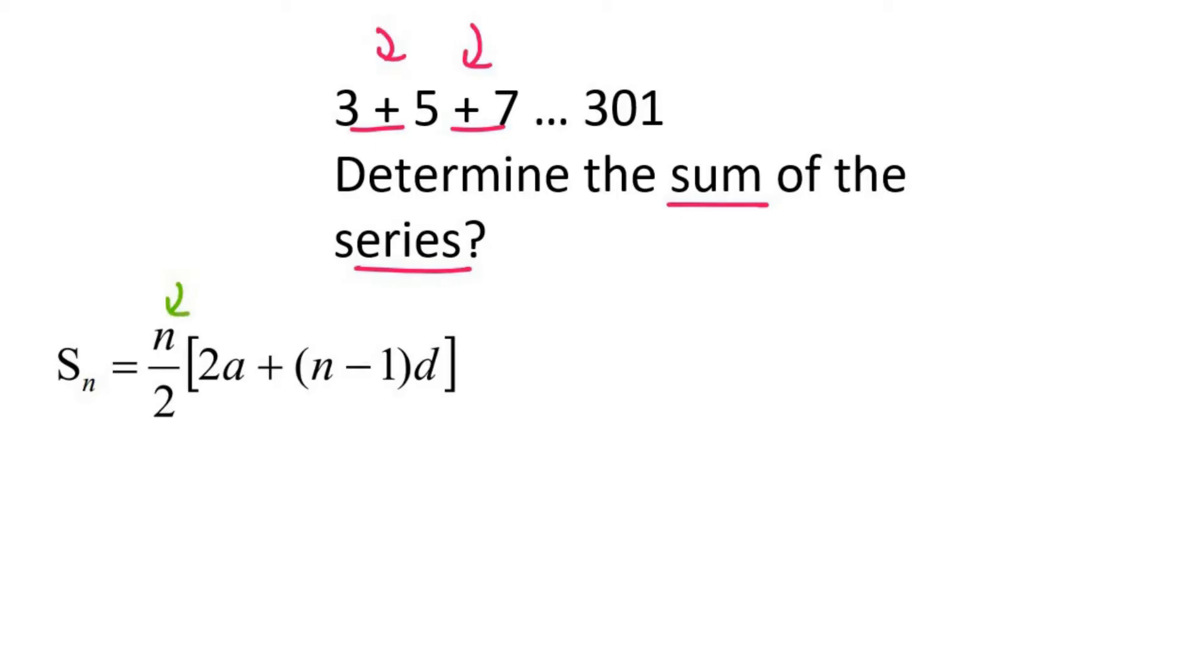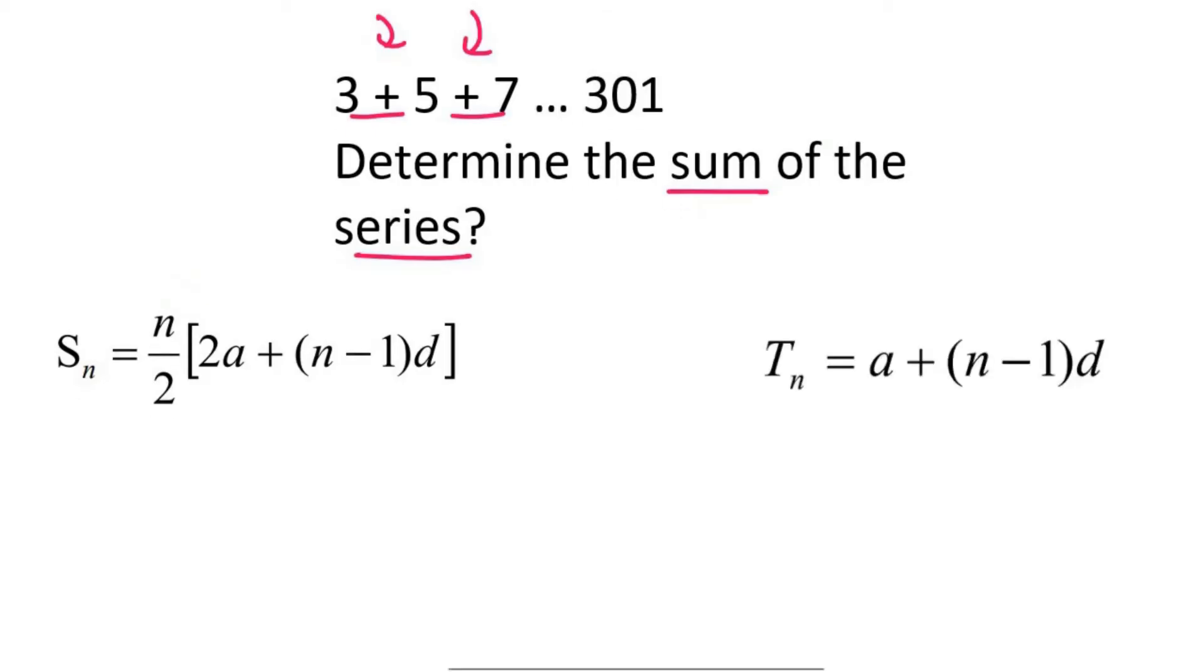So what you do in a question like this is you use the tn formula. And we know that the last term is 301. So we put the 301 over here. And then a is 3. We don't know how many terms there are. And then the common difference is 2.